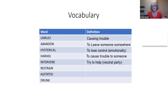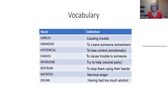Restrain — to stop them using their hands. Agitated — a nervous anger. And drunk, which I'm sure you all know already, is having had too much alcohol.